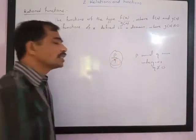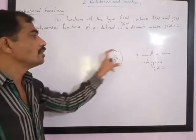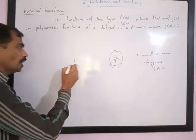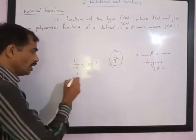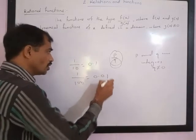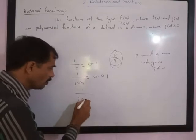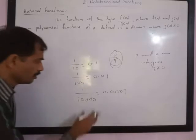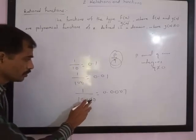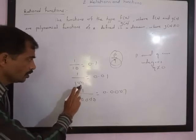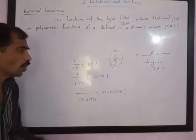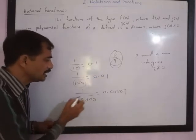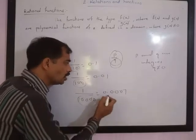We already know that in any fraction, if the denominator becomes 0, the fraction becomes undefined. For example: 1 upon 10 gives 0.1; 1 upon 100 gives 0.01; 1 upon 10,000 gives 0.0001. If the denominator increases, the value approaches 0.